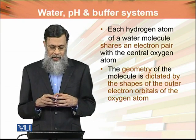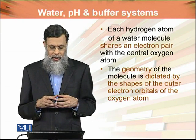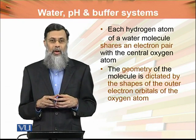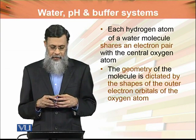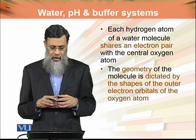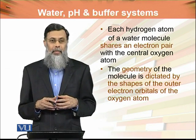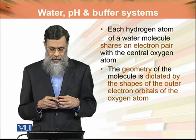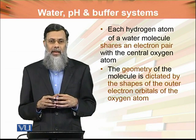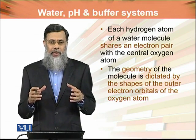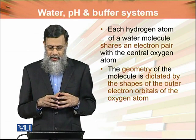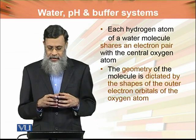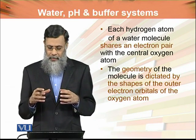Each hydrogen atom of a water molecule shares an electron pair with the central oxygen atom. Therefore, the geometry of the molecule is dictated by the shapes of the outer electron orbitals of the oxygen atom. Oxygen's atomic number is 8, and its valence is 2.